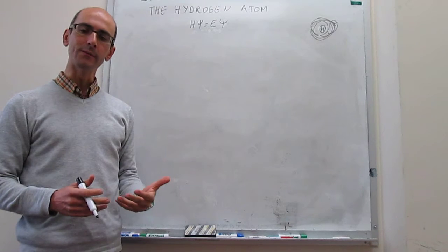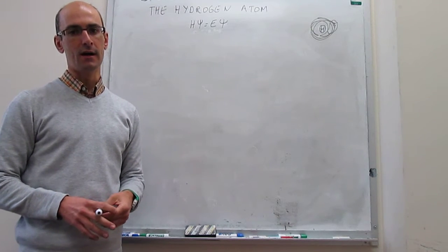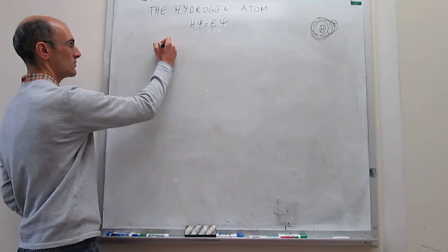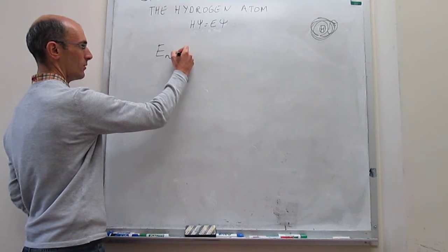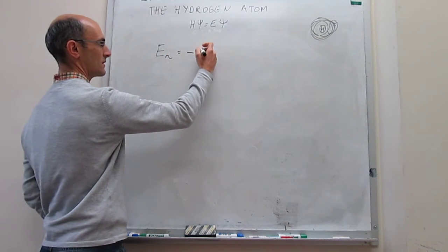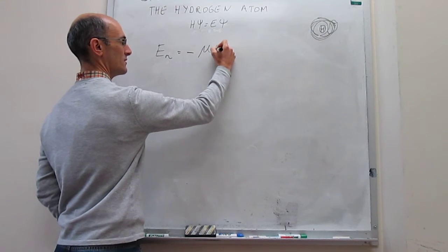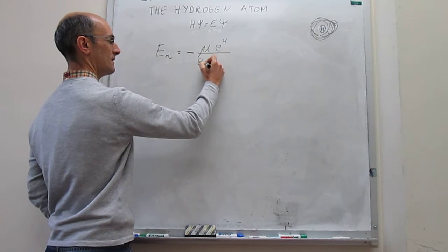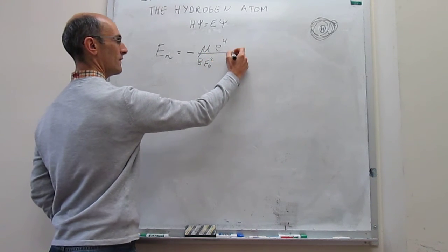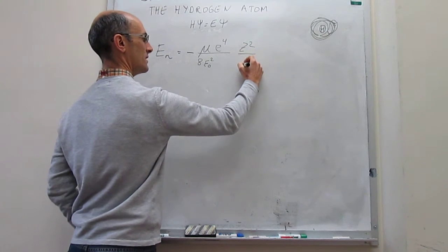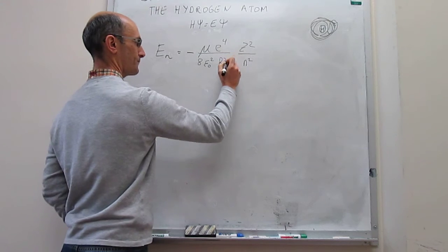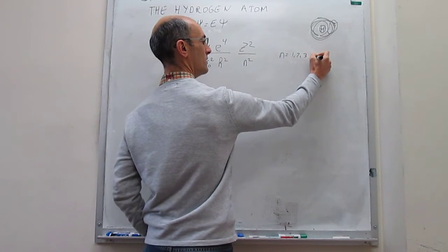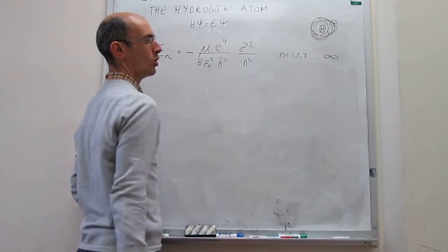Even though we have three quantum numbers, it turns out that only the principal quantum number is the one that affects the energy term. The energy solution to the hydrogen atom equation depends only on the principal quantum number and has values that look like this: reduced mass, then atomic charge to the 4th, divided over 8, epsilon-zero squared, then h-bar squared, N squared, and then h-bar squared. There are an infinite number of values that go from 1 all the way to infinity.